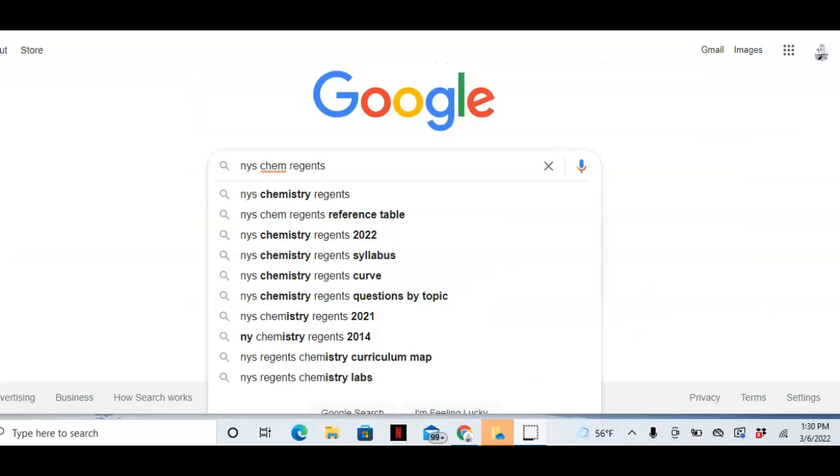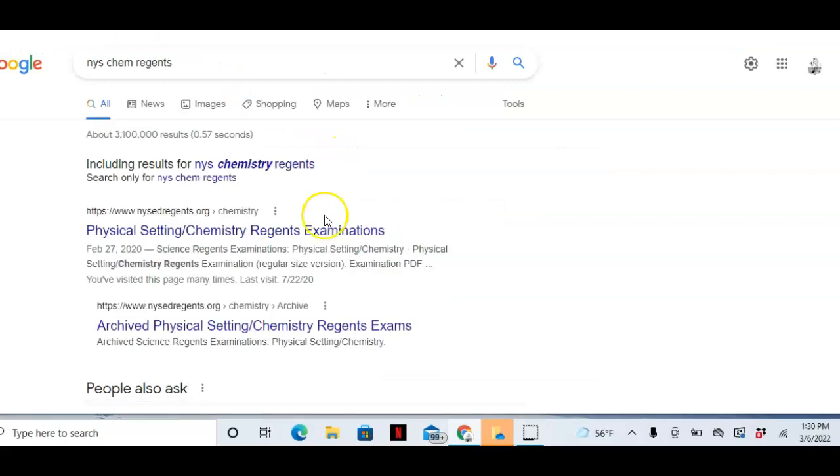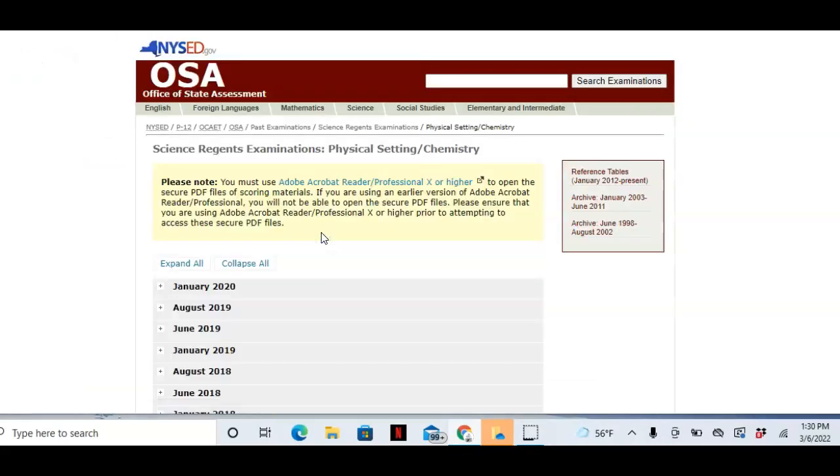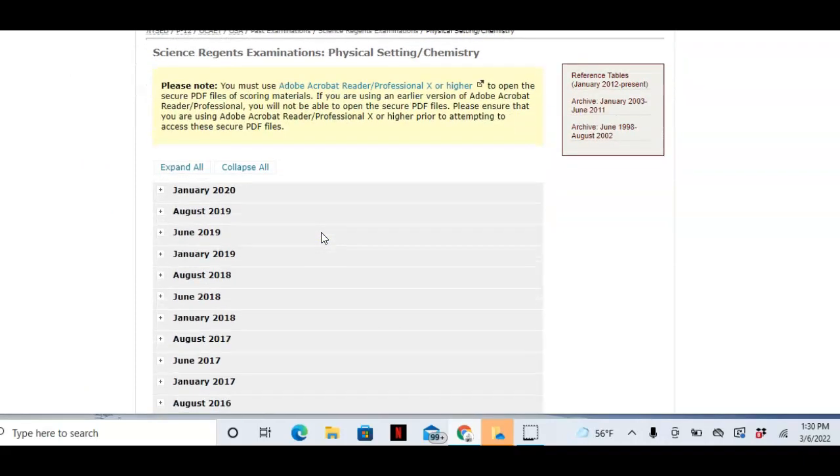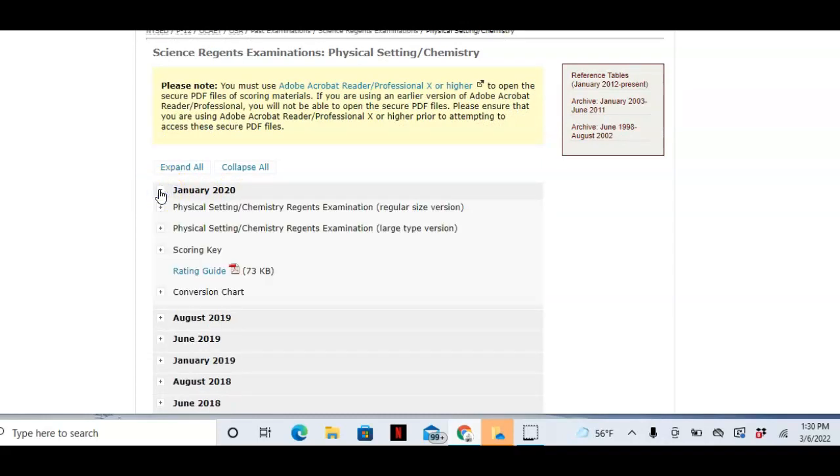You can find old Regents exams just by going on Google or some other search engine. Type in New York State Chem Regents. Here they are. Same thing with all your other Regents exams. 2020 was the last Regents exam that was administered by the state since the pandemic. You can click on the plus sign. Here is the actual exam, here is a scoring guide, a rating guide, and then the conversion chart.